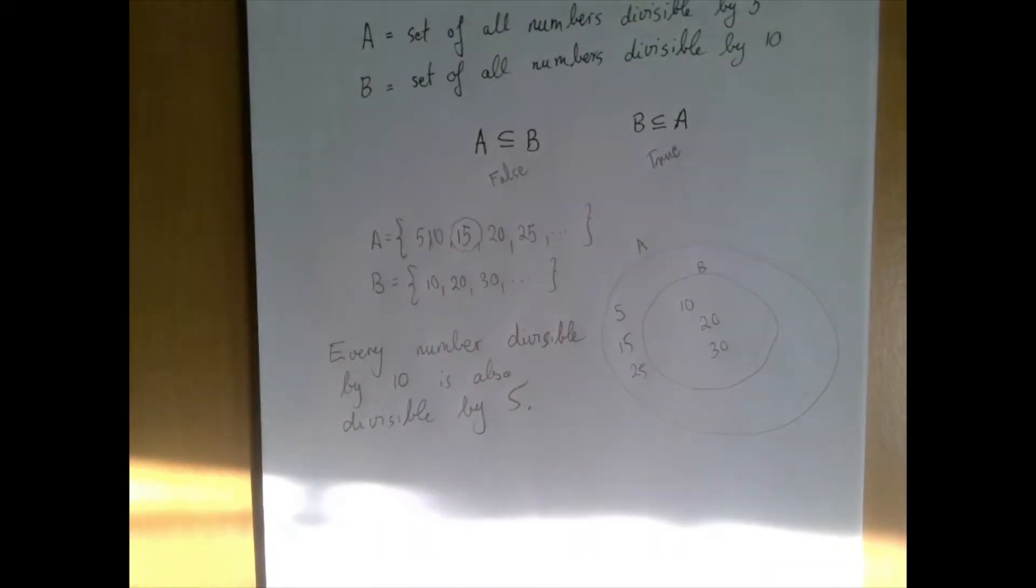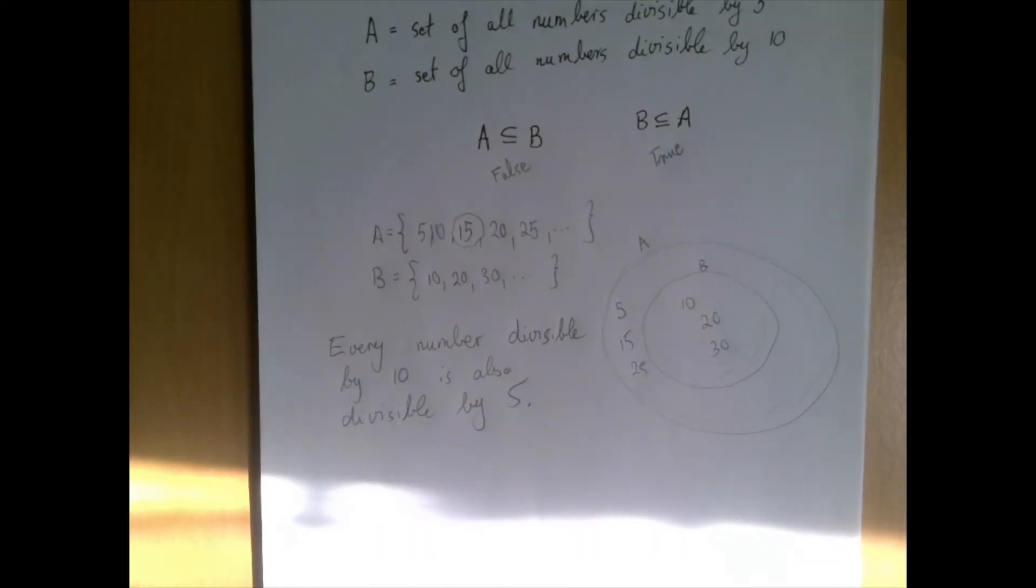So every number in B is automatically already inside of A. And that is the same thing as to say that every number that is divisible by 10 is also divisible by 5. Thank you for watching.